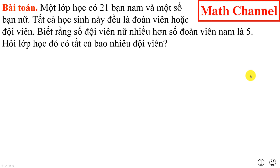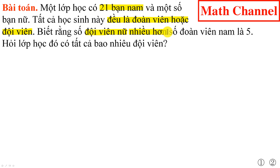Trước khi đi vào giải bài toán, chúng ta cần phân tích đề bài. Đề bài nói rằng lớp học này có 21 bạn nam và số lượng học sinh nữ thì chưa biết. Nhưng tất cả các học sinh này đều là đoàn viên hoặc đội viên. Đề bài cho biết thêm rằng số đội viên nữ nhiều hơn số đội viên nam là 5, và yêu cầu chúng ta tìm trong lớp học đó có bao nhiêu đội viên.